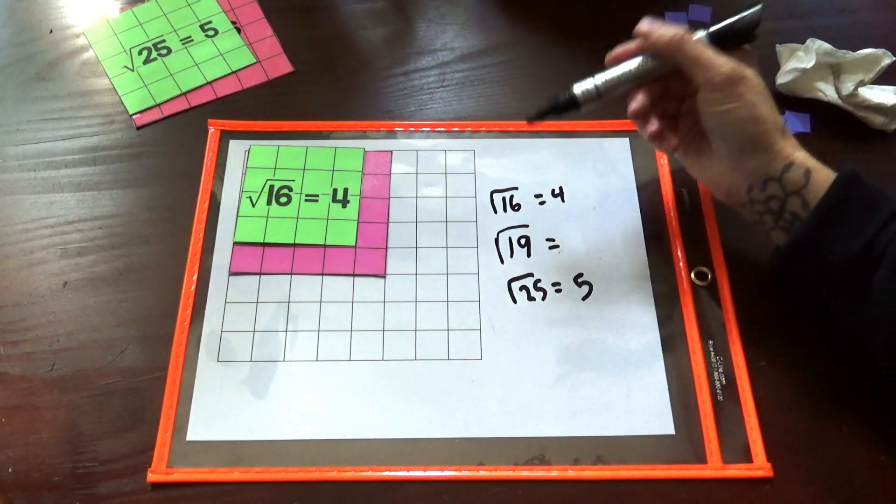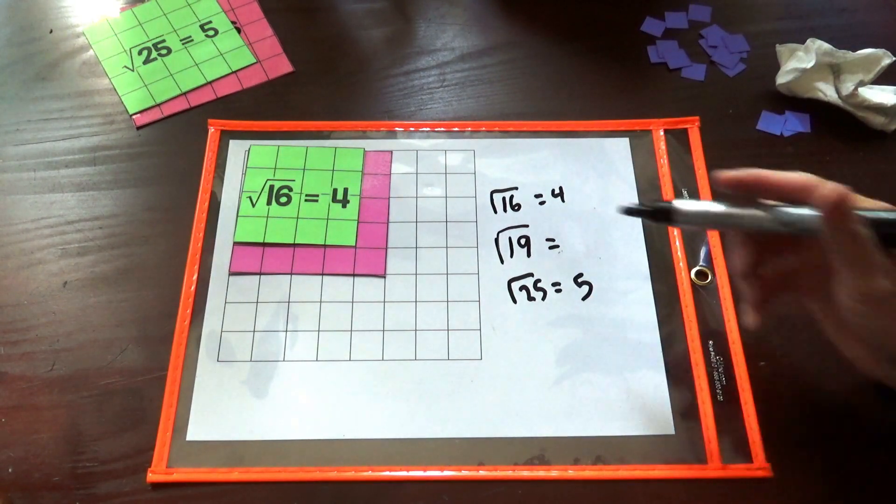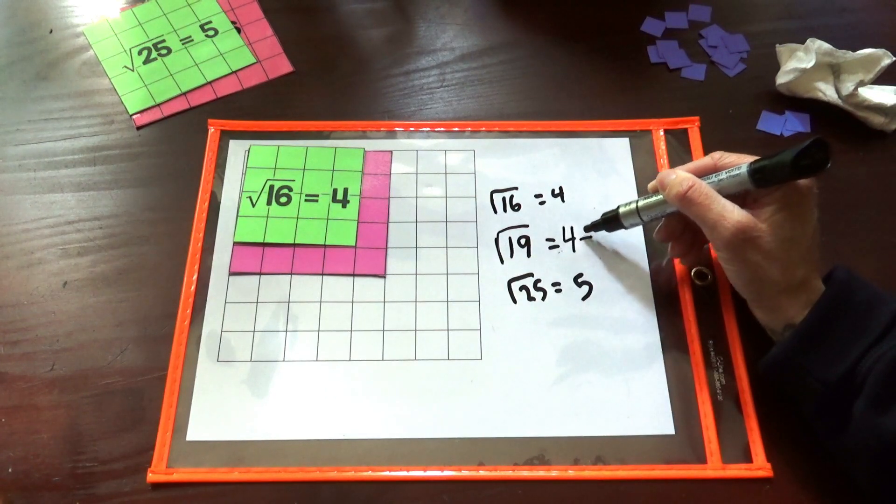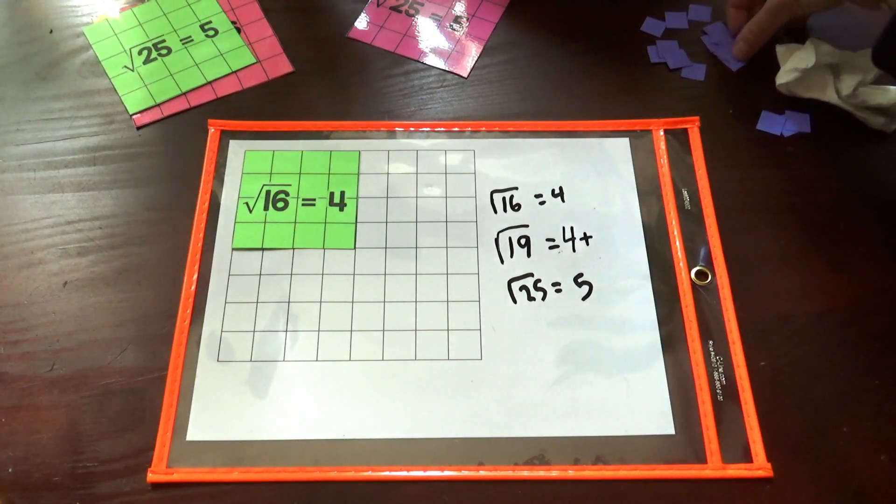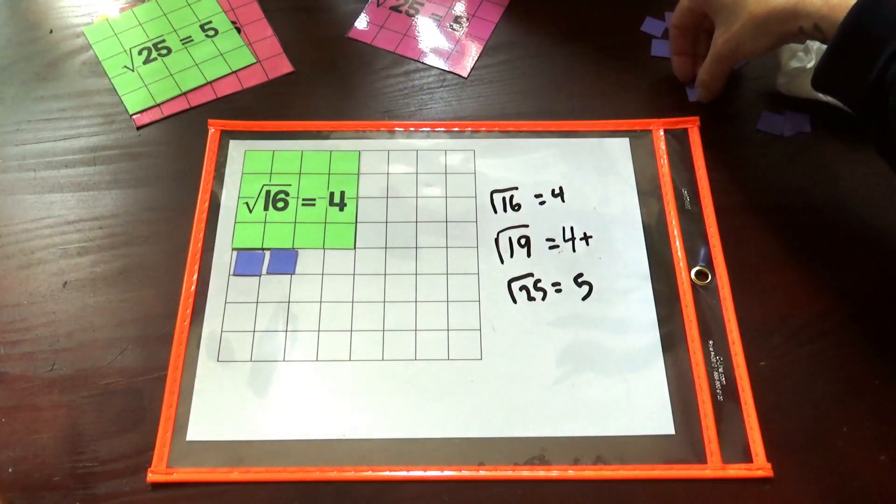So how can we use the square root of 16 and the square root of 25 to estimate the square root of 19? We know it's going to be 4 and something. And let's get to 19. So 16, 17, 18, 19.